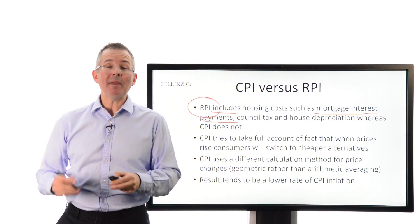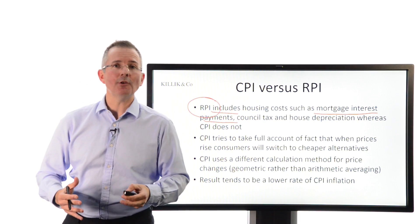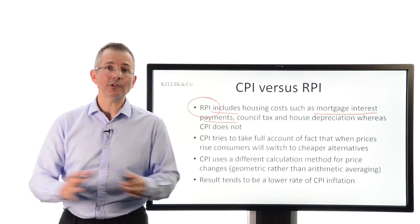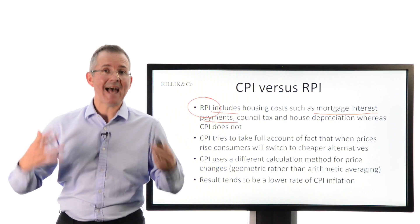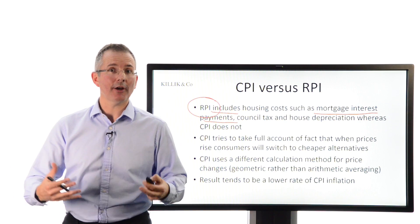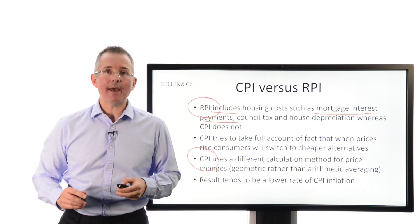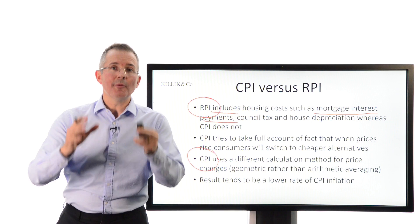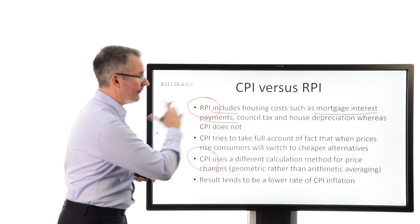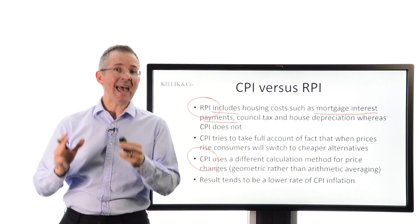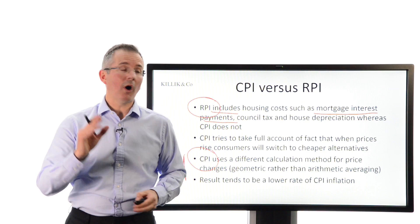The CPI also takes account of the fact that people change their spending habits. If something gets expensive, you don't just stop buying it — you tend to switch to something else. In a modern economy, with the CPI being the newer measure, that product substitution is increasingly straightforward. The CPI also uses a different calculation method. The net result is that the CPI tends, on the whole, to be lower than the RPI.